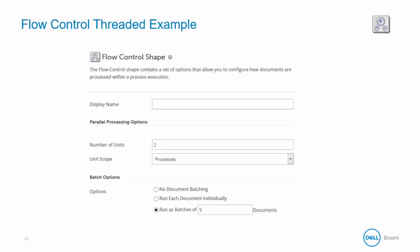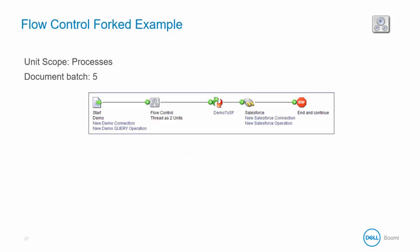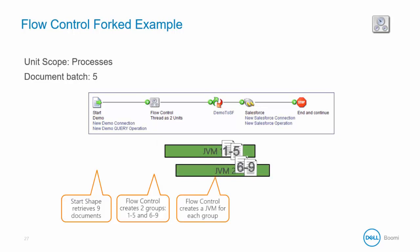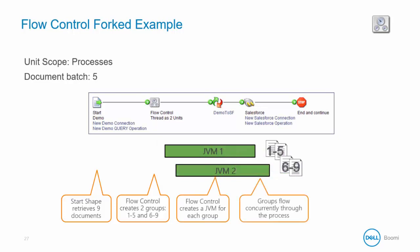In this example, the flow control shape is set up differently because the unit scope is now set to processes rather than threads. Using a flow control shape with a five-document batch count and unit scope set to processes, the nine documents flow in and the flow control creates two groups, spinning up a JVM for each group. They get sent to Salesforce from different machines. So flow control allows concurrent processing either by thread or by JVM — multiple threads share the same heap space, while multiple JVMs each have their own.